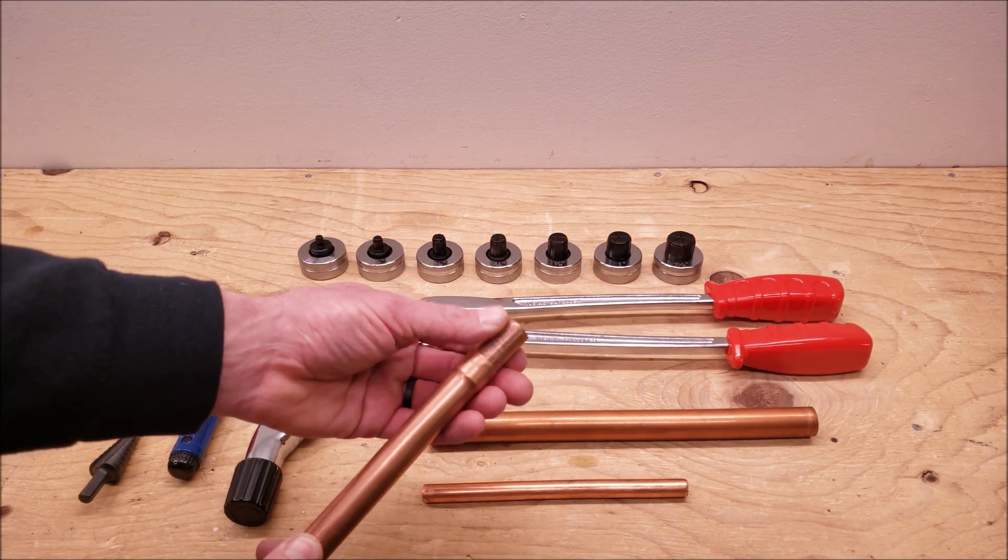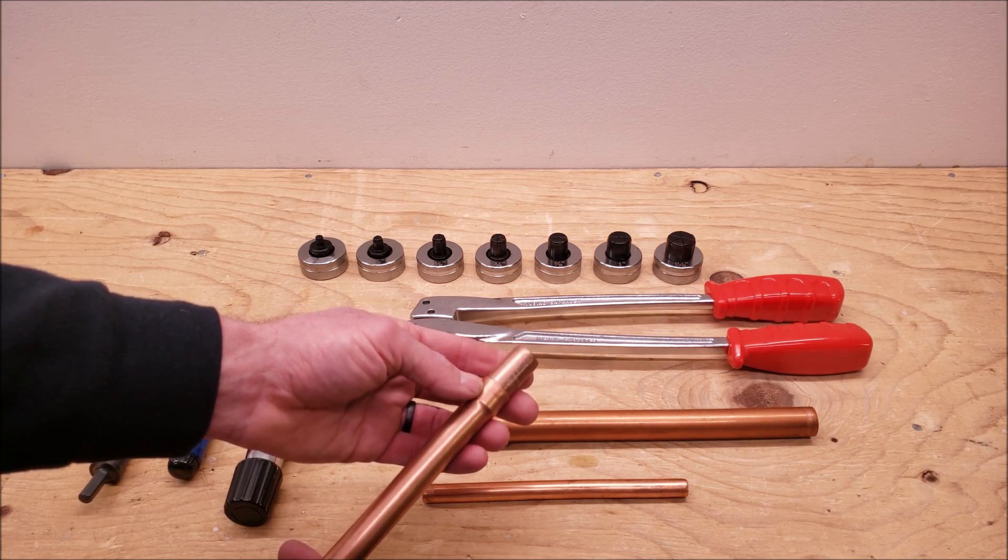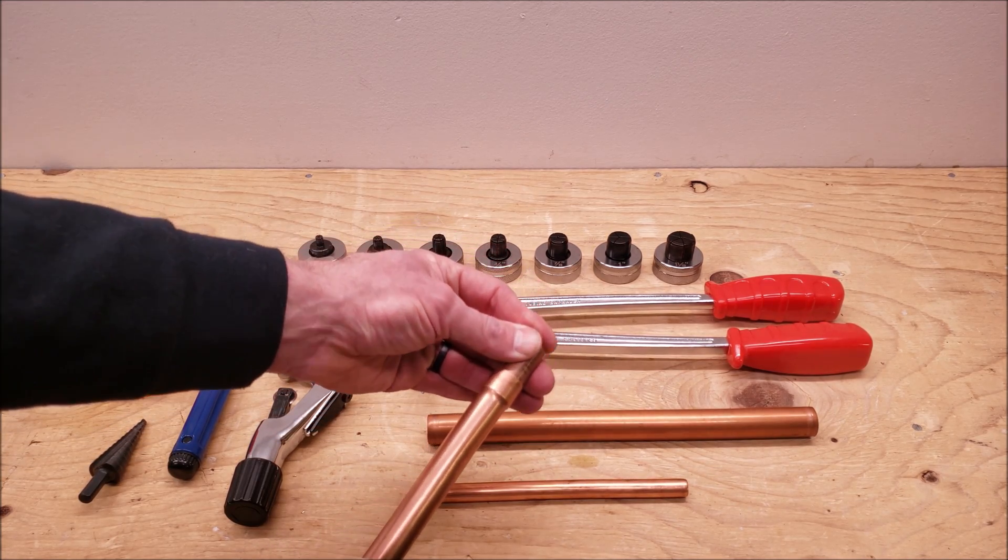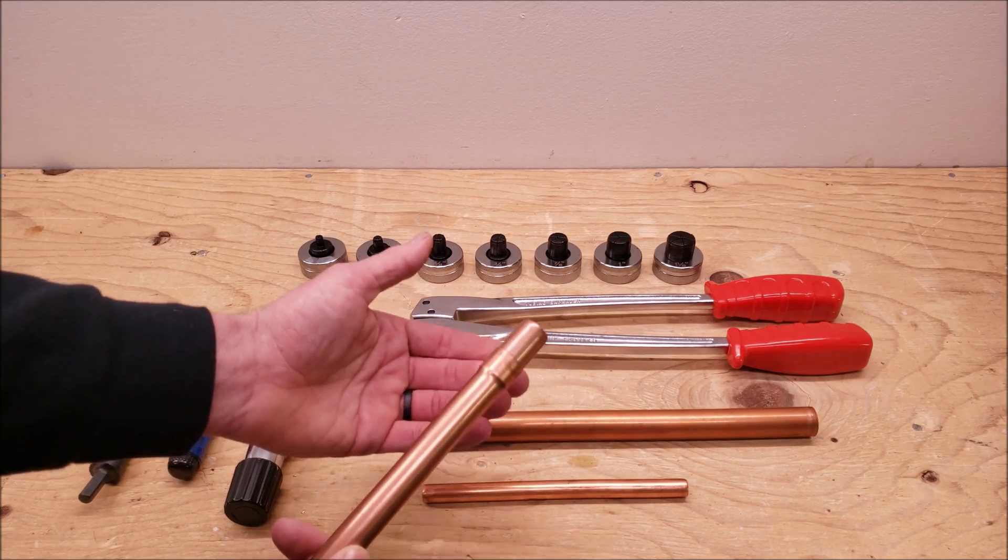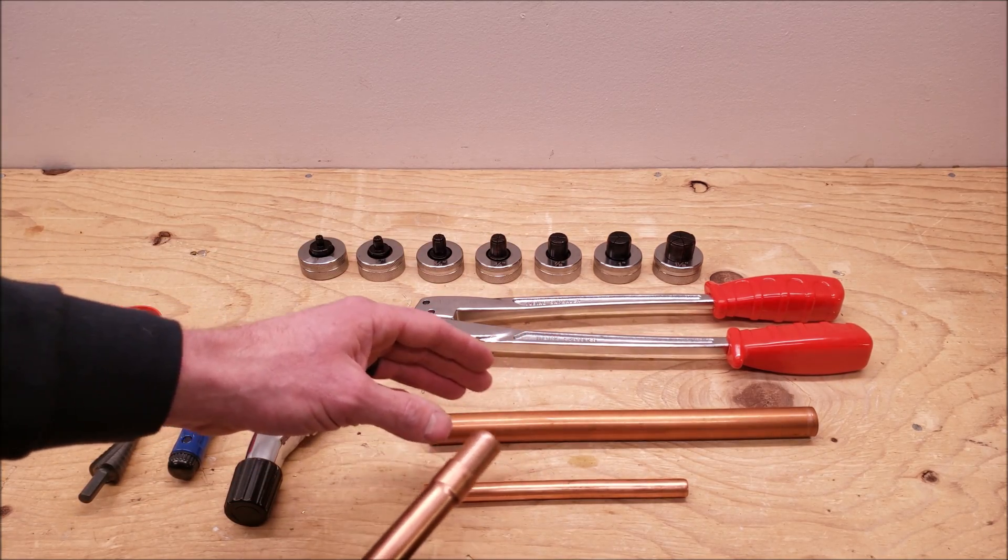The other positive thing about a tool like this is that you don't have to run to the supply house in order to finish the job if you don't happen to have the coupling that you need in the truck, or maybe the 90 or something like that, because you can bend 90s with the soft copper and you can swage them.